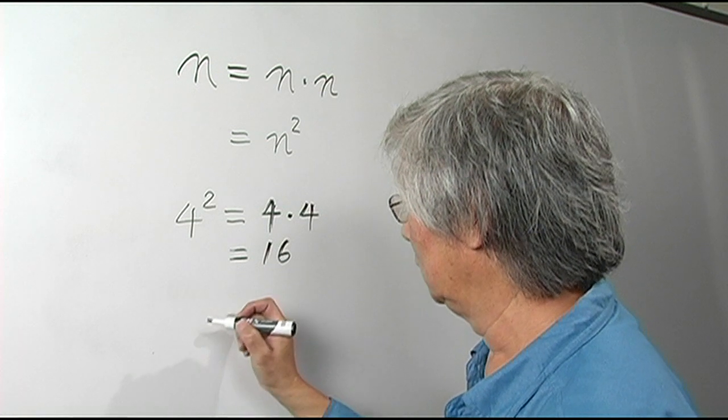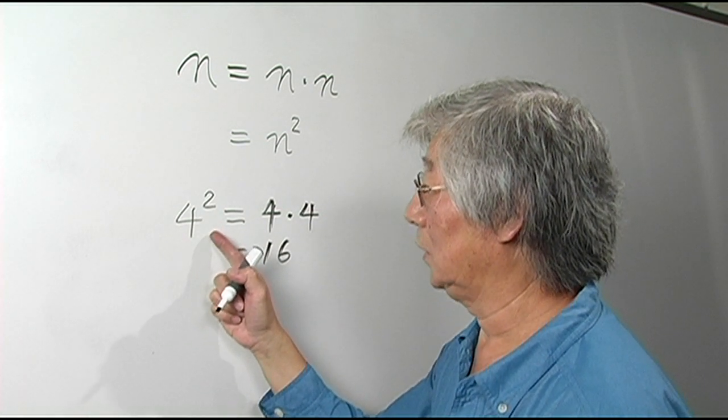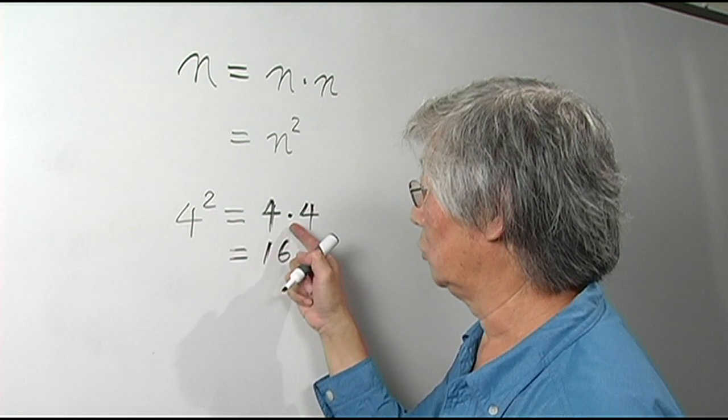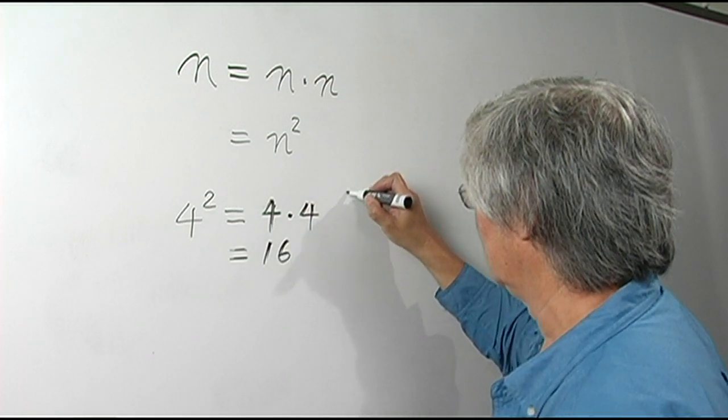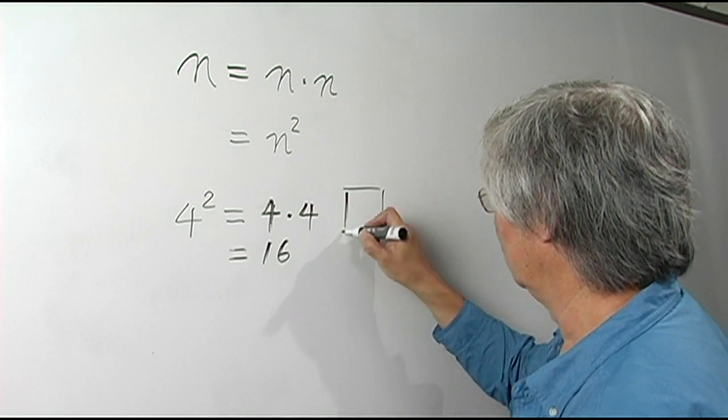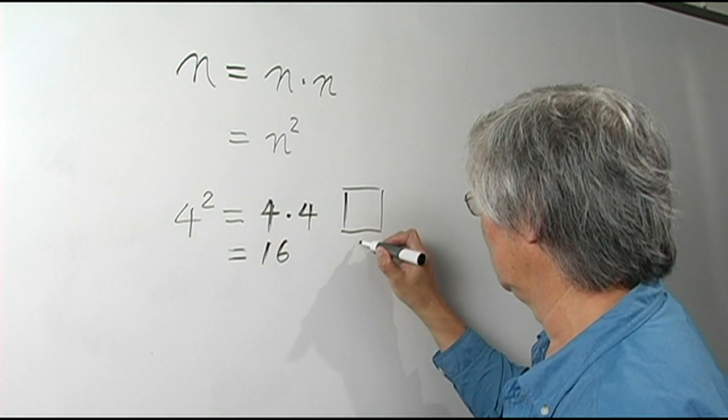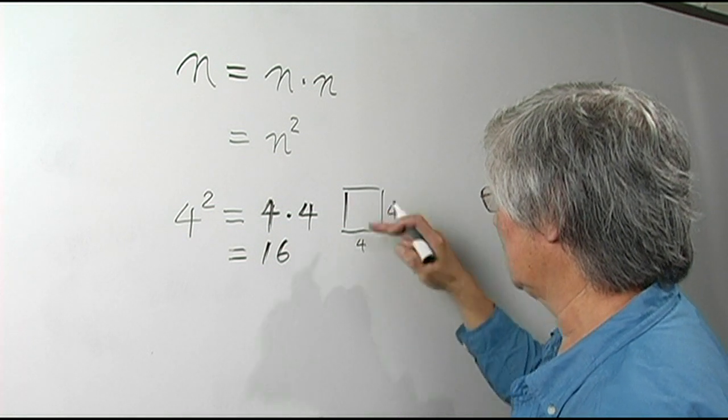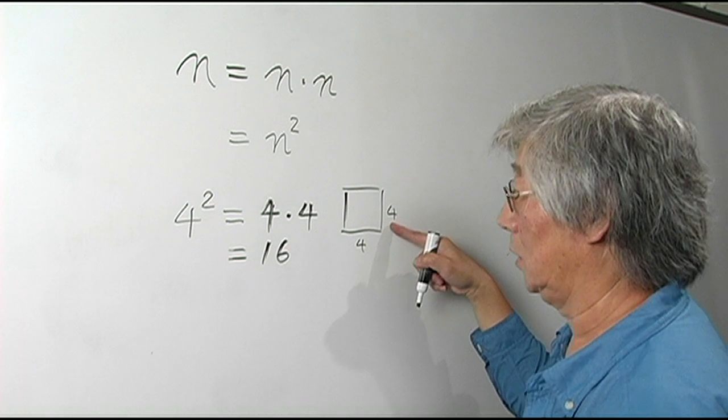Here's another example. Another way to say this is 4 squared. And the reason why we say that is that raising the number by 2 is sometimes pictured as the area of a square whose side is 4.